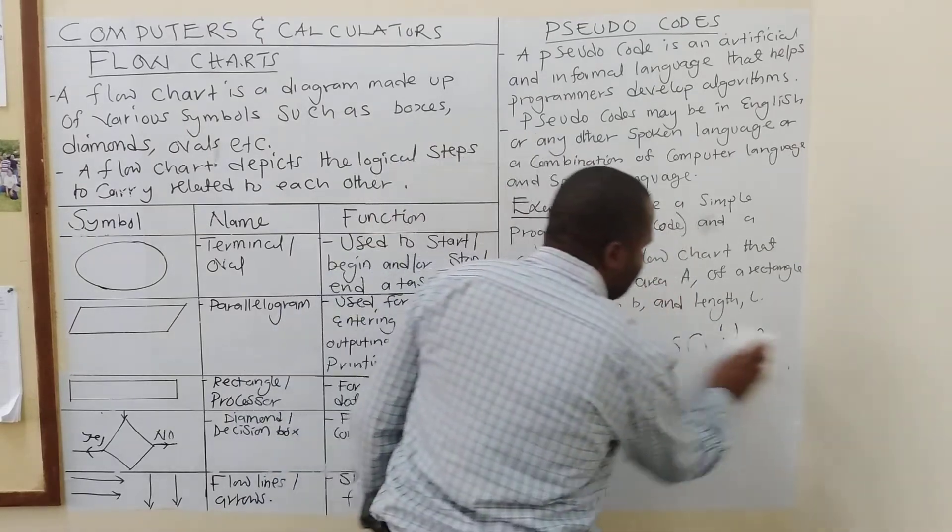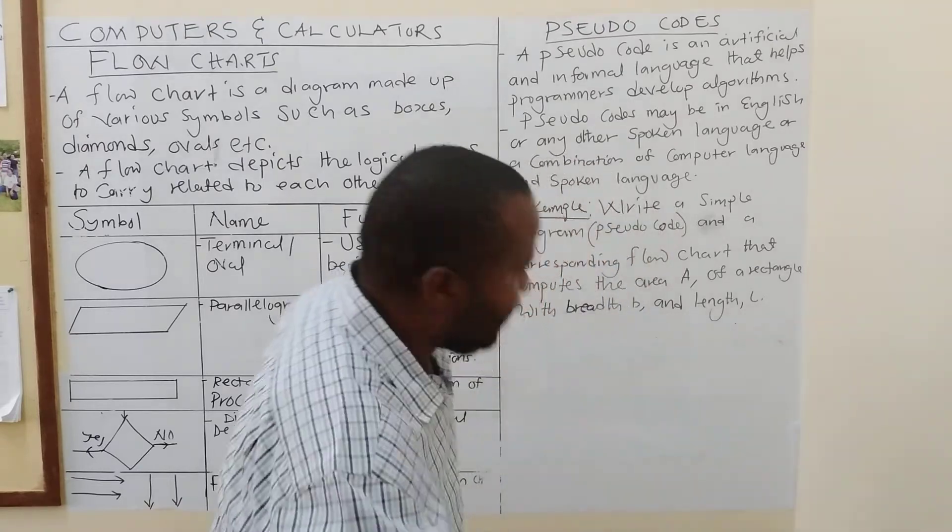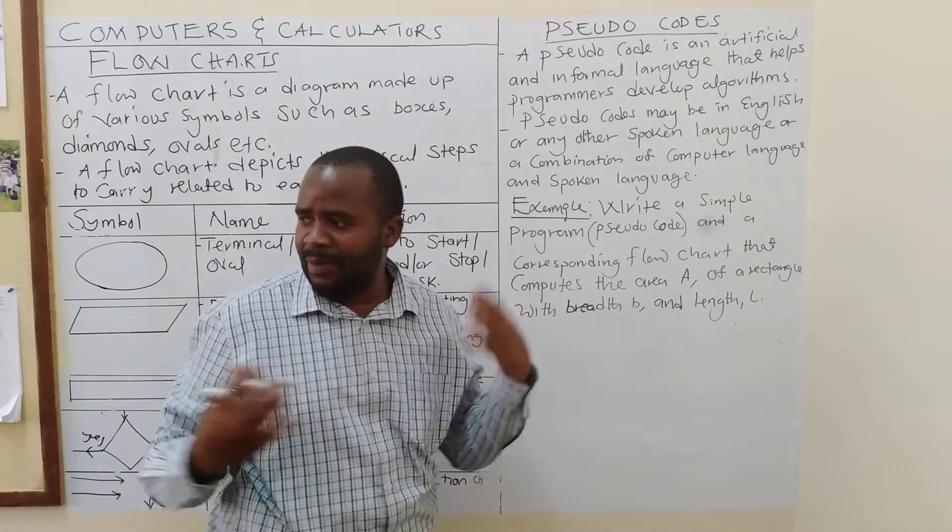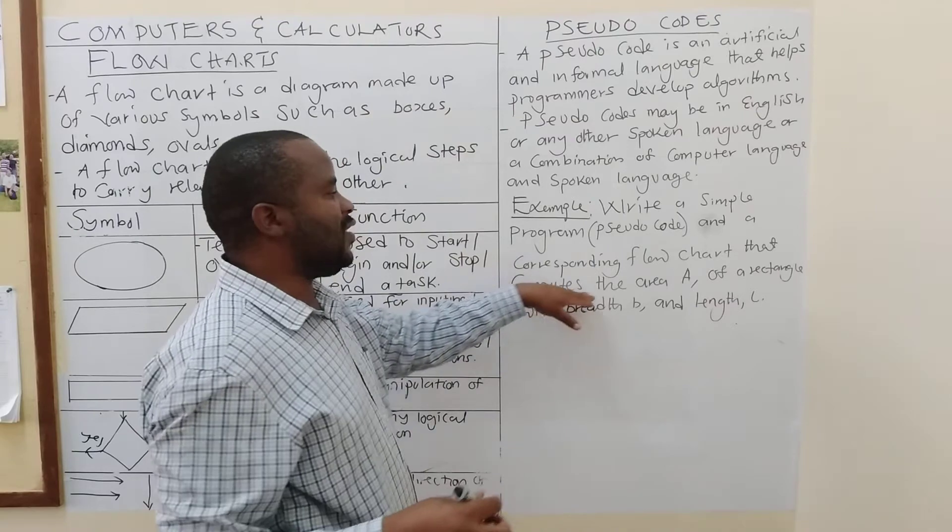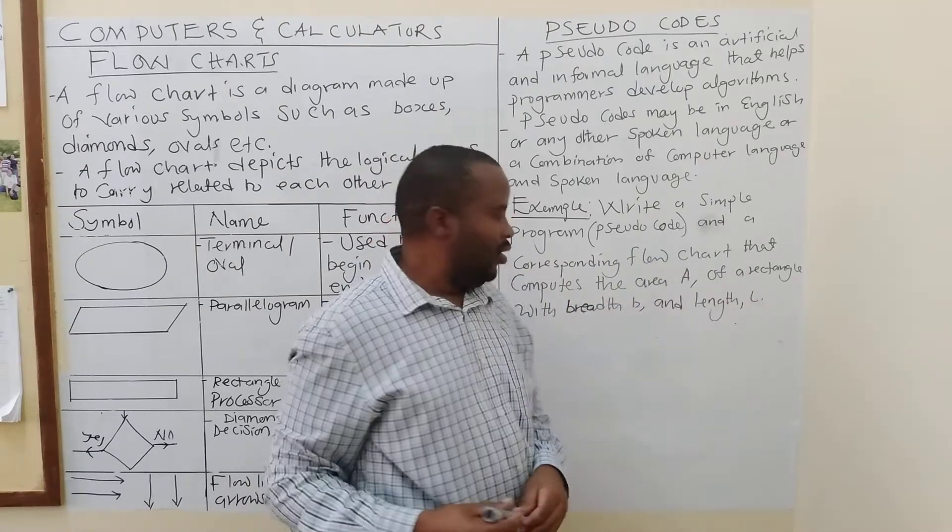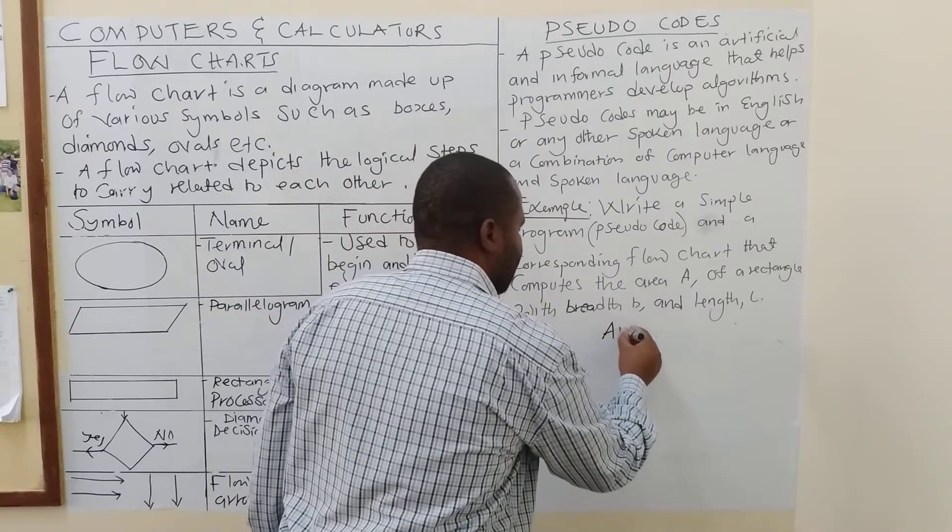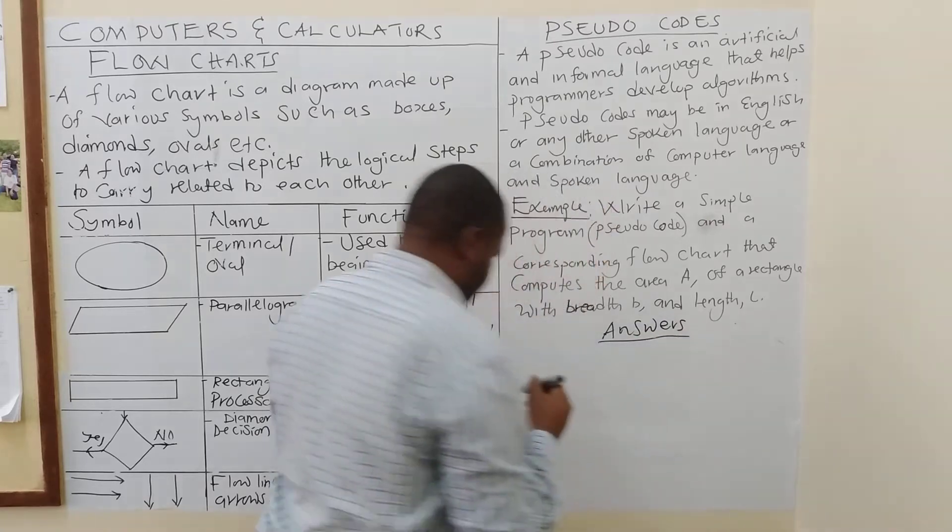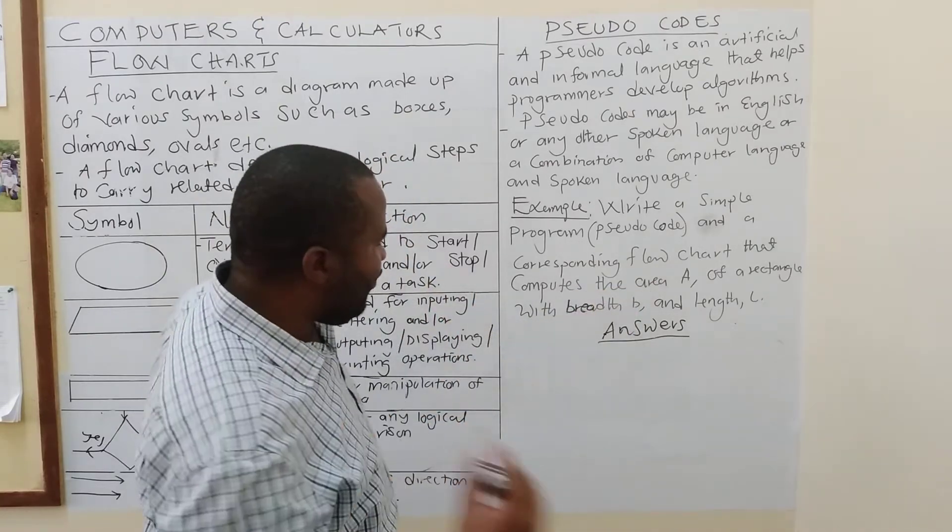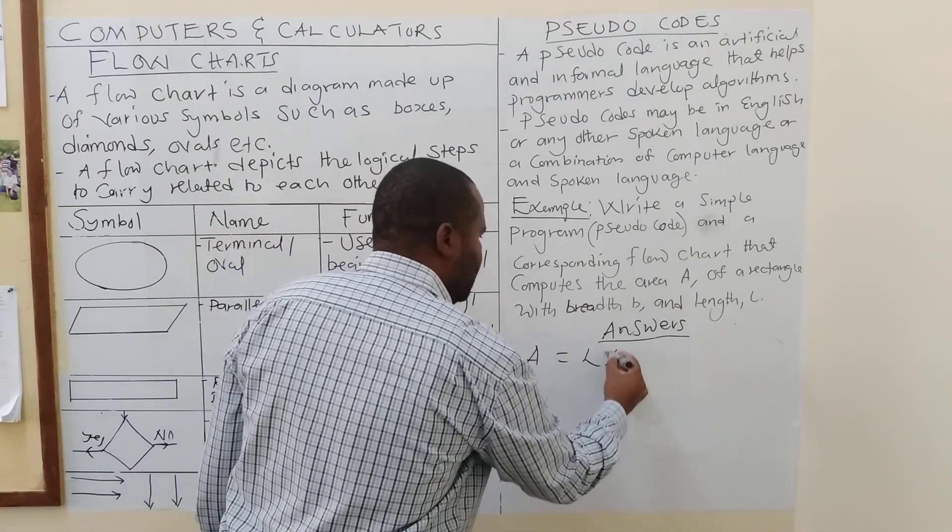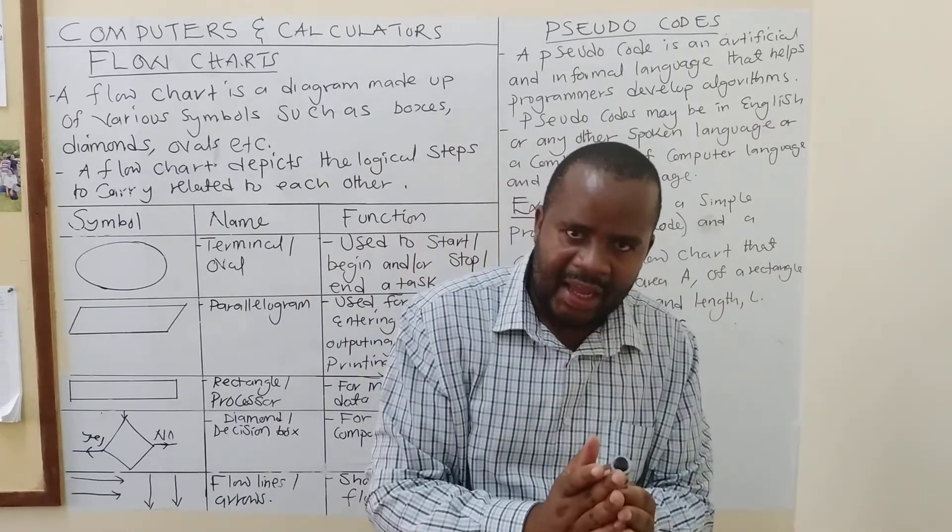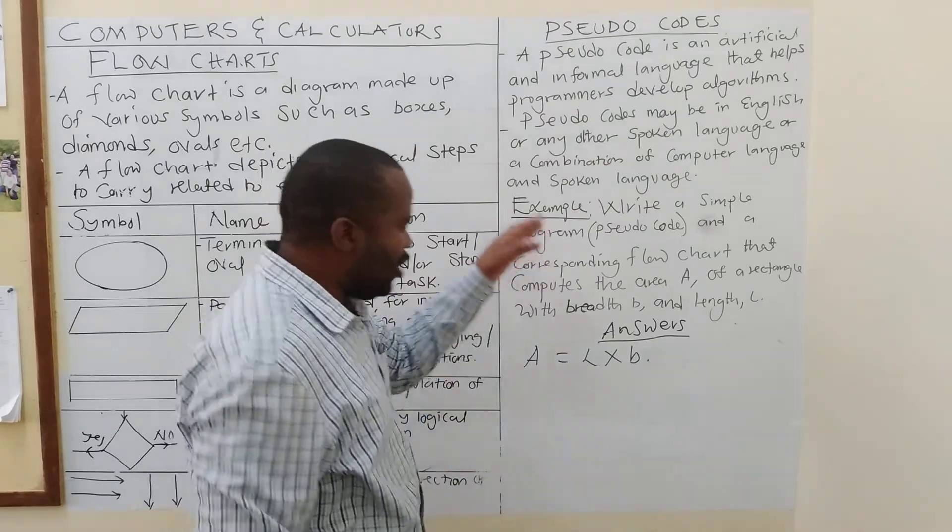So, with me, here is an example which I want us to attempt together. So, I say, write a simple program. I am emphasizing it's a simple program. And a corresponding flowchart that computes the area A of a rectangle with breadth B and length L. So, now, here, look, we want to find the area of a rectangle. So, what should come to your mind is, how do I find the area of a rectangle? Area of a rectangle is given by L times B, length by breadth.